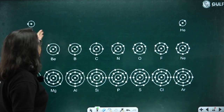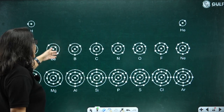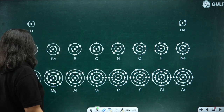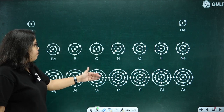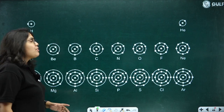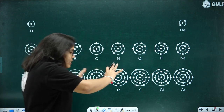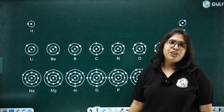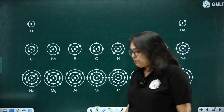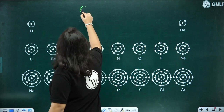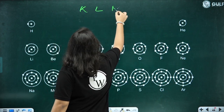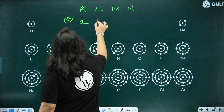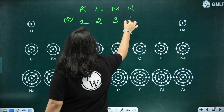This is how electrons are distributed for the first 20 elements — hydrogen, helium, lithium, beryllium, boron, carbon, nitrogen, oxygen, fluorine, neon, sodium, magnesium, aluminium, silicon, phosphorus, sulfur, chlorine, argon, potassium, and calcium — across their respective shells K, L, M, and N, or 1, 2, 3, and 4.